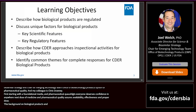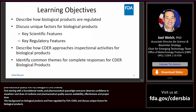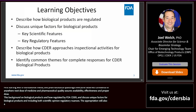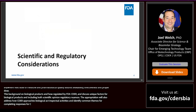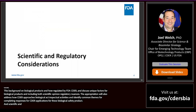This presentation will include a basic background on how biological products such as monoclonal antibodies and other therapeutic proteins are regulated by FDA CDER. It will discuss unique factors for chemistry, manufacturing, and controls for biological products, including both scientific and regulatory nuances. The presentation will also address how CDER approaches inspectional activities for these biological products and will identify key themes that lead to complete responses for marketing applications.